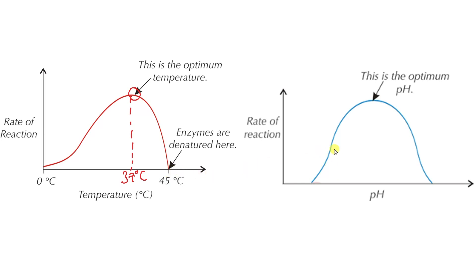So similarly with pH, this also happens. You can reach an optimum pH and a suboptimum pH on either side here where the rate of reaction is lower.